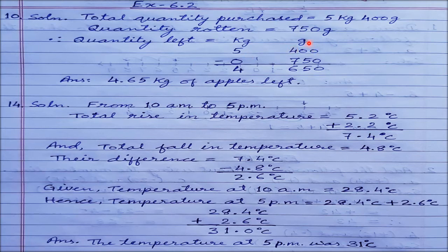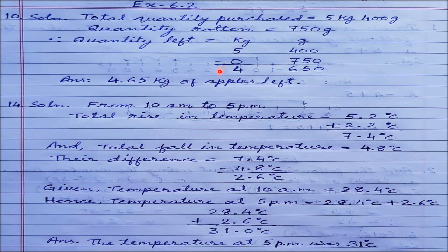Quantity left will be 5 kg 400 grams minus 750 grams, arranged as 5 kg 400 g minus 0 kg 750 g in proper columns. From the grams side: 0 minus 0 is 0; borrow 1, so 10 minus 5 is 5; 3 minus 7 not possible, borrow from kg, 13 minus 7 is 6; 4 left, 4 minus 0 is 4. So the quantity left is 4 kg 650 grams, which in decimal is 4.65 kg.